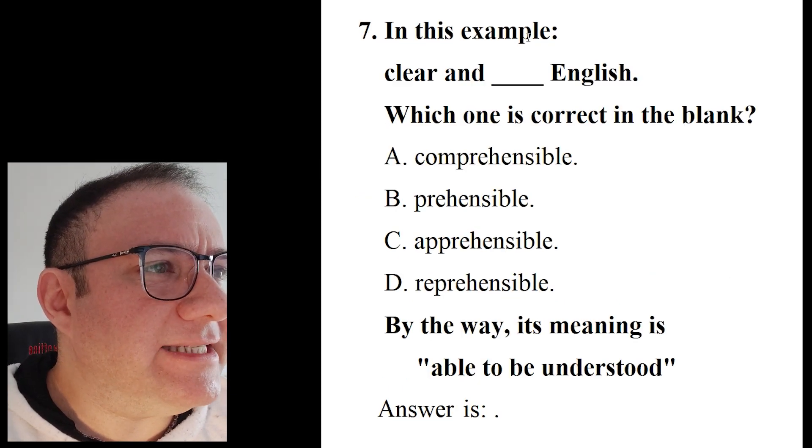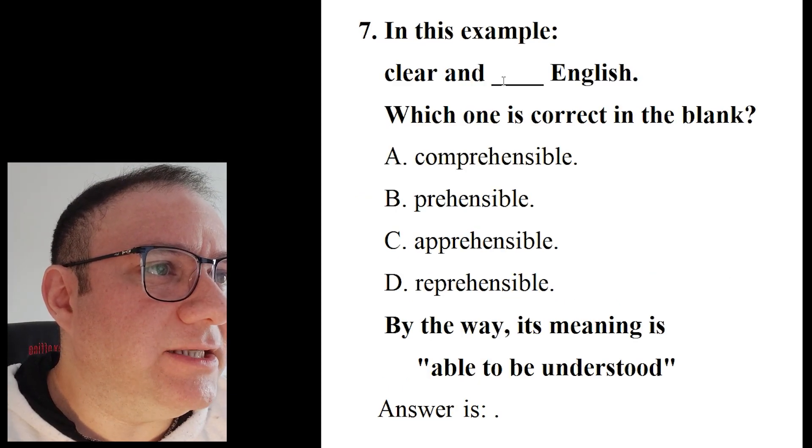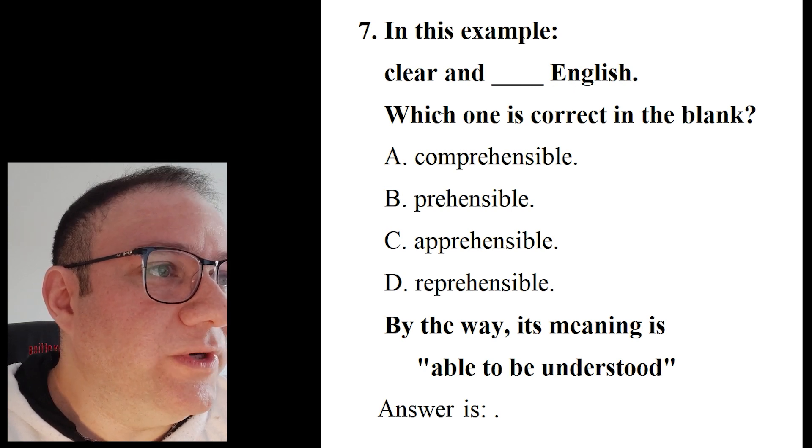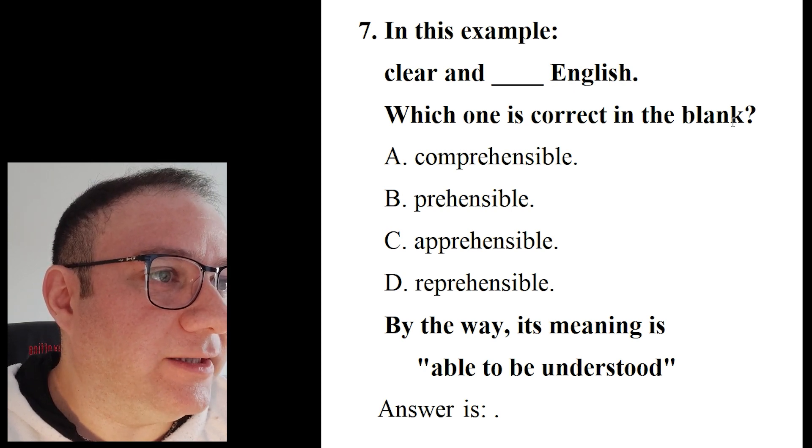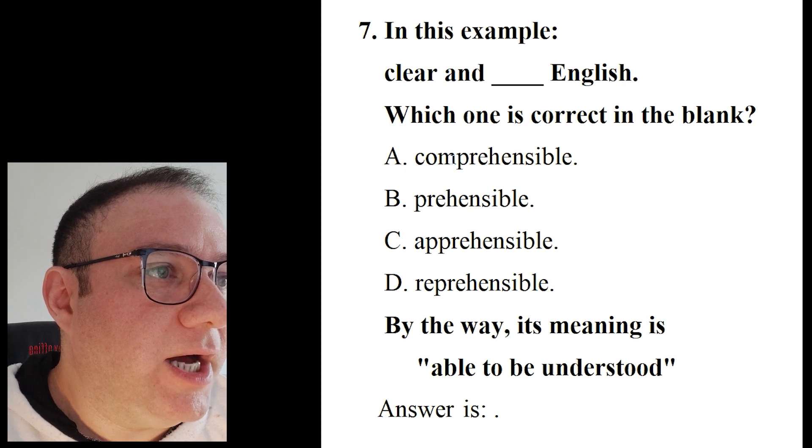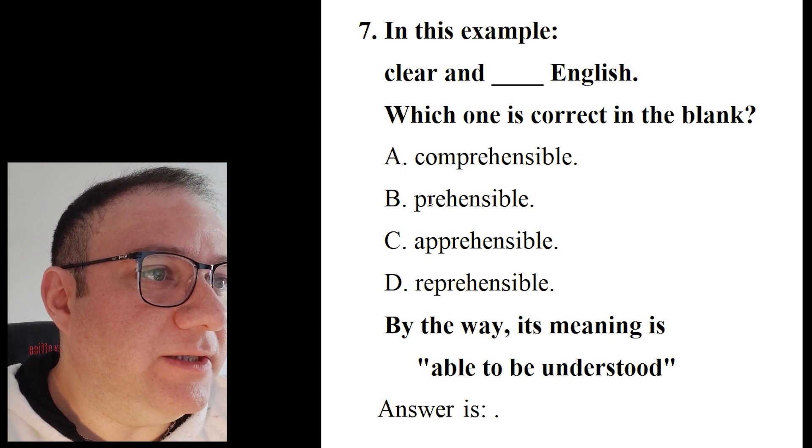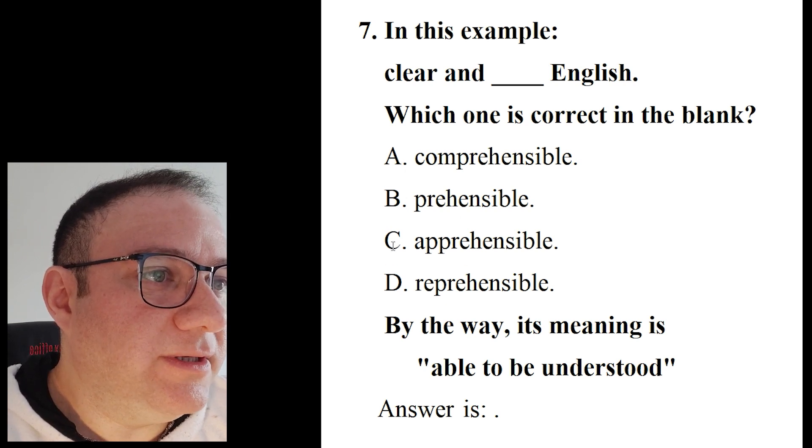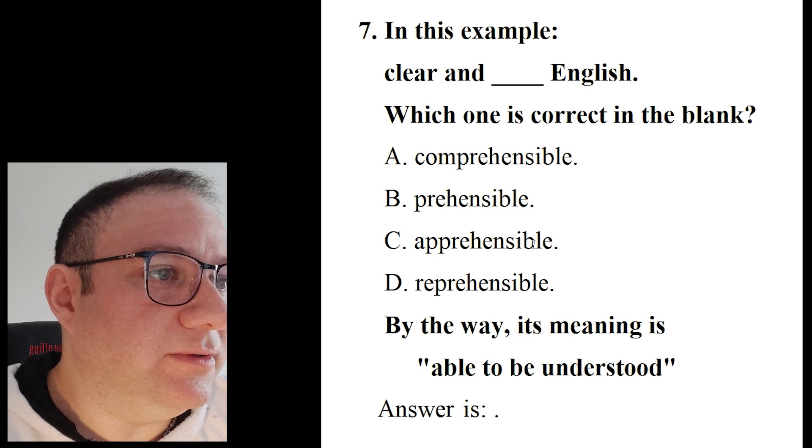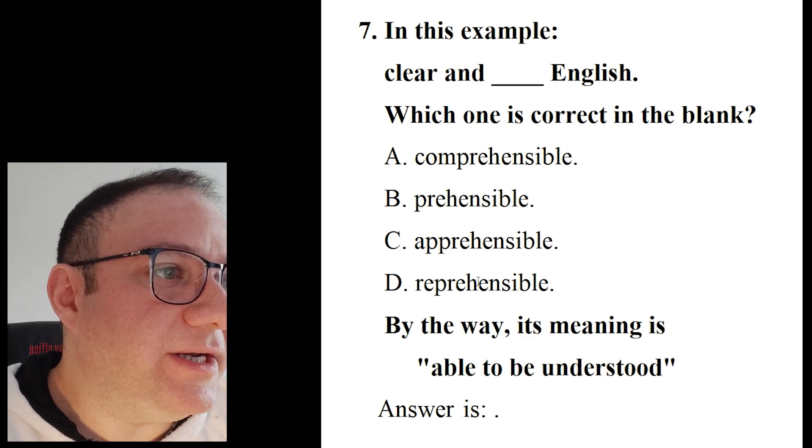Question number seven: In this example, clear and blank English. Which one is correct in the blank? A. comprehensible, B. prehensible, C. apprehensible, D. reprehensible.